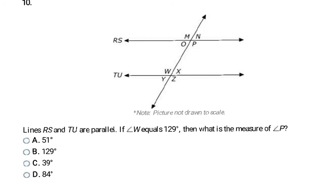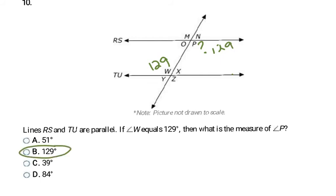Lines RS and TU are parallel. If angle W equals 129 degrees, what is the measure of angle P? Writing 129 by W, angles W and P are alternate interior angles. When lines are parallel, alternate interior angles are congruent. So if W is 129 degrees, then P is 129 degrees. My answer is B.